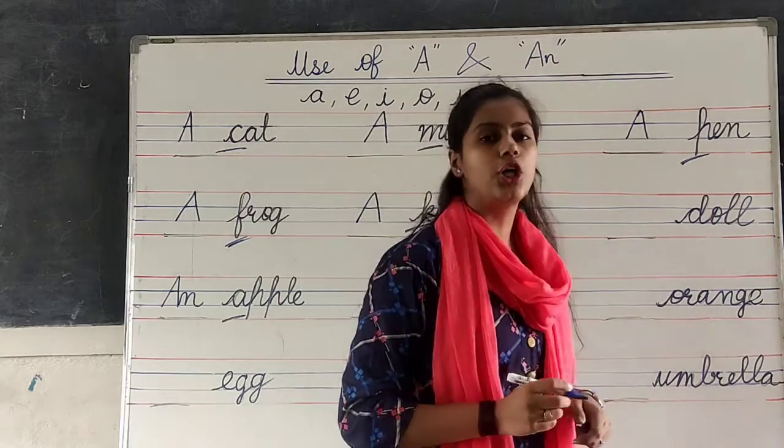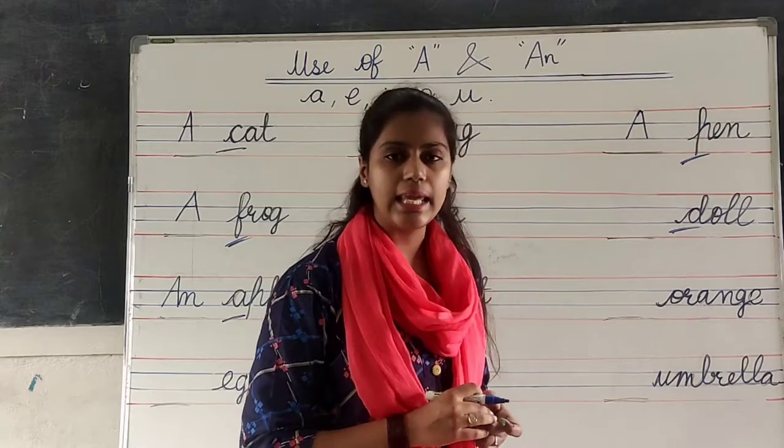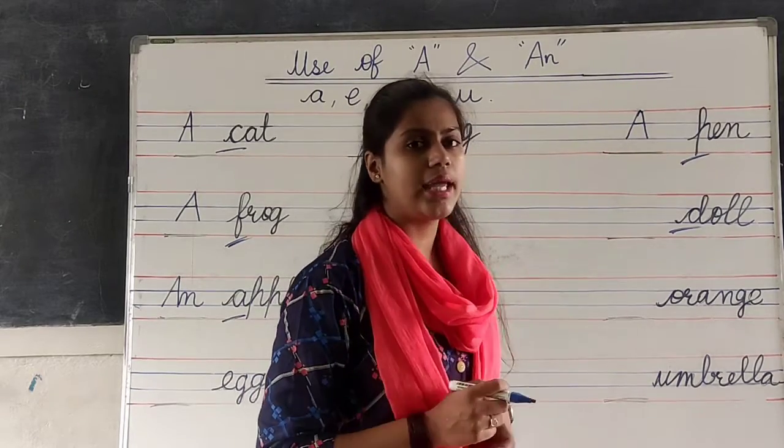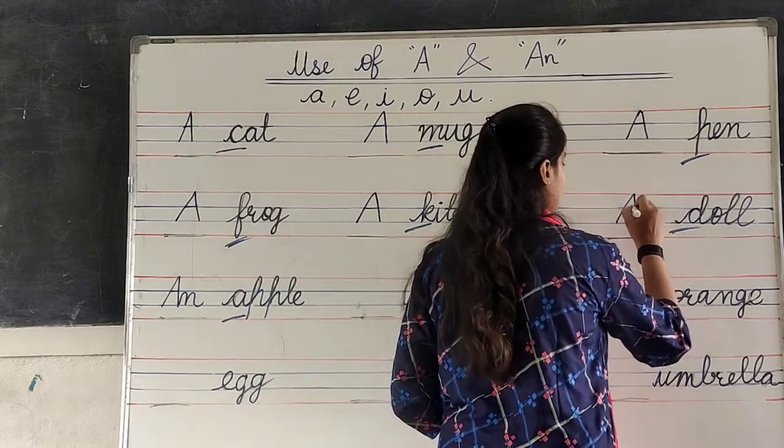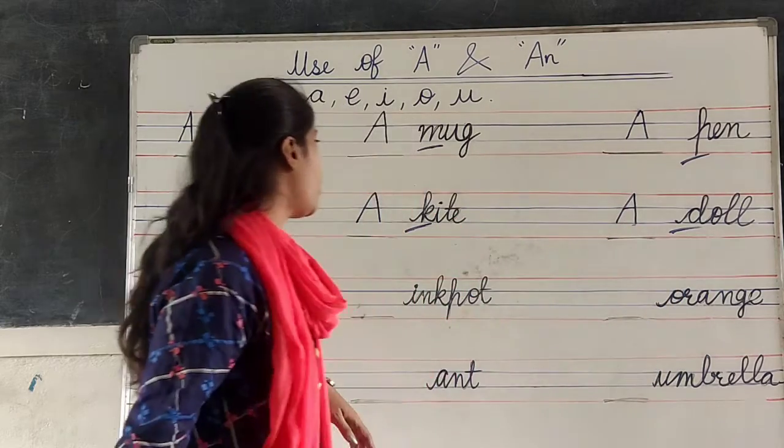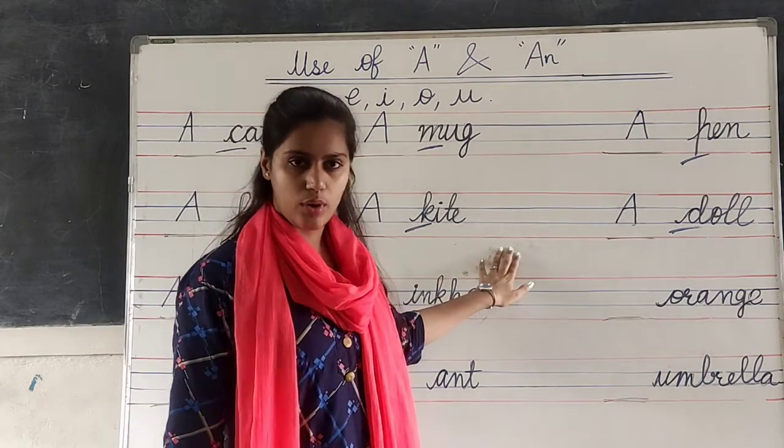Next, doll. D, O, double L. Doll. First letter is D. Then we have to write. What we have to write? A. Very good. Now, these are the examples of A. Okay?